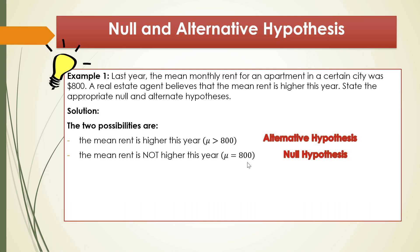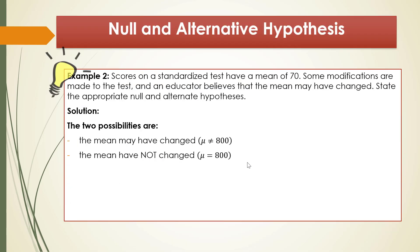Let's look at Example 2. Scores on a standardized test have a mean of 70. Some modifications are made to the test and an educator believes that the mean may have changed. State the appropriate null and alternate hypotheses. The two possibilities are: the mean has changed, so mu differs from 70; or the mean has not changed, so mu equals 70. Since the second possibility carries the equal sign, H₀: mu = 70, and H₁: mu ≠ 70.